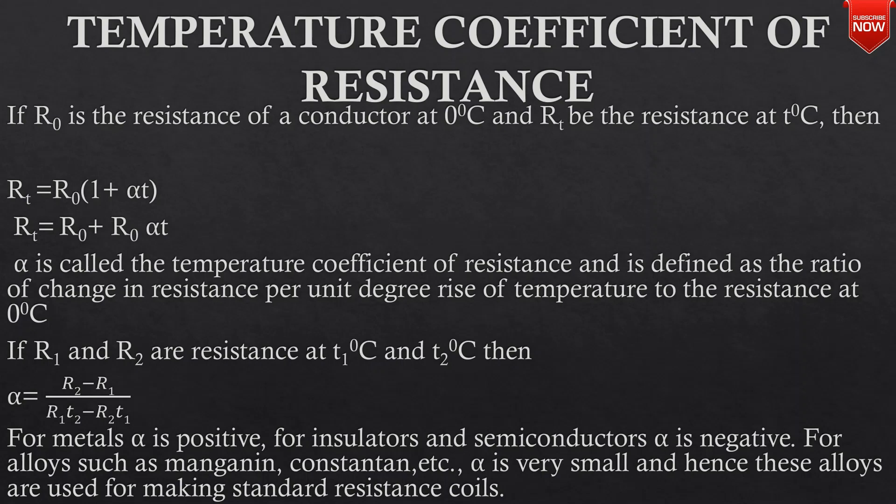RT equals R0 plus R0 alpha T. Alpha is called the temperature coefficient of resistance and is defined as the ratio of change in resistance per unit degree rise of temperature to the resistance at 0 degrees Celsius.